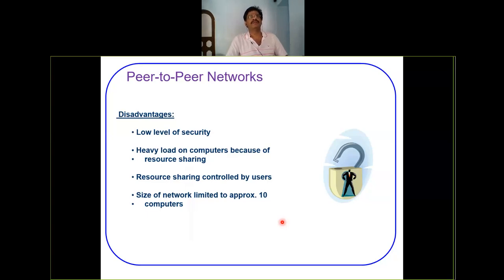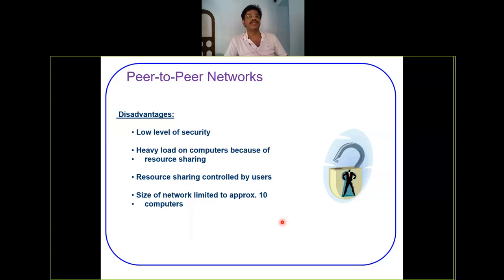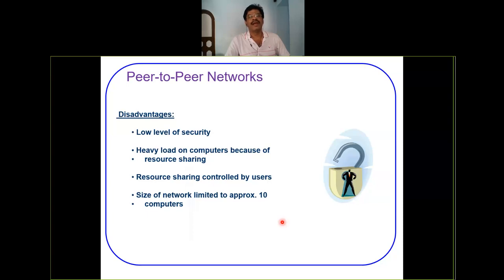When one printer is shared by multiple terminals, there will be a heavy load due to a single resource being shared by all. Resource sharing is controlled by the user — terminal A can share a file with only terminal B and not with C or D. This heavy load from resource sharing restricted the number of terminals in peer-to-peer configuration to 10 computers.